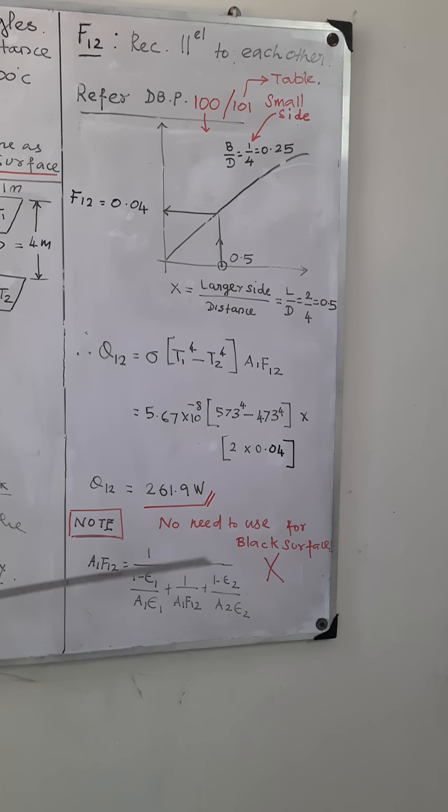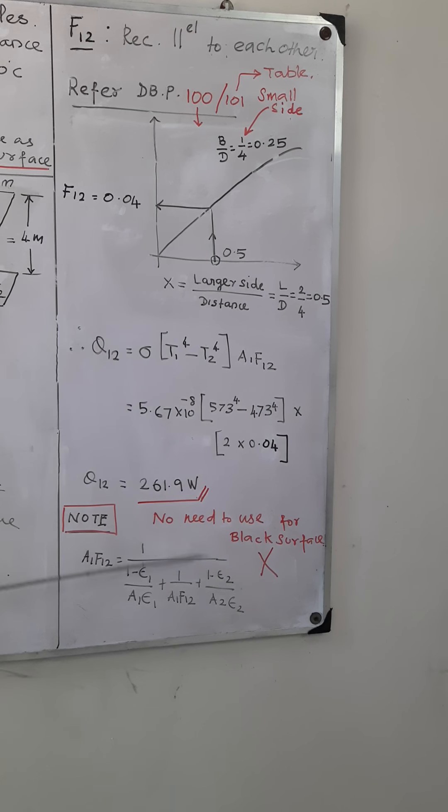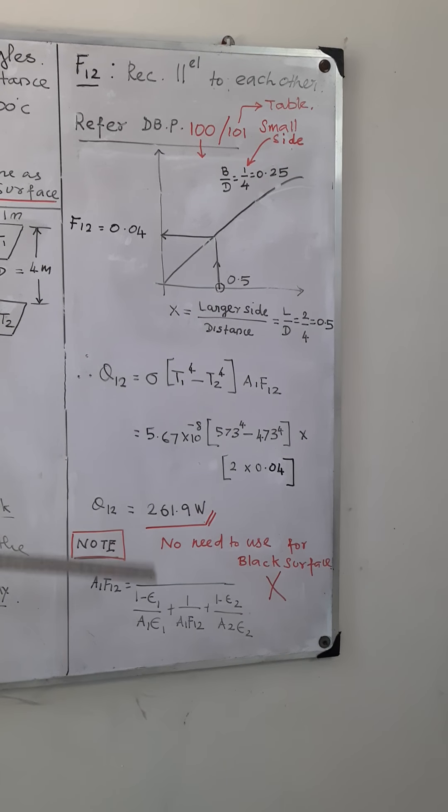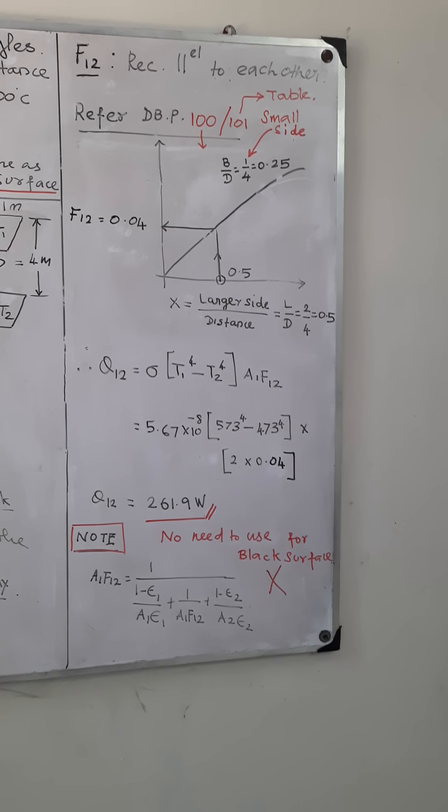So it's a very simple problem. Why? Because emissivities are not given, so it is not a grey surface, it's a black surface. That's why we are referring to parallel rectangles heat radiation. Thank you.